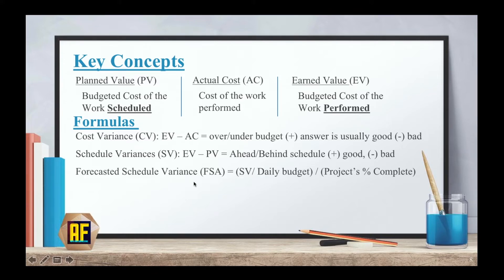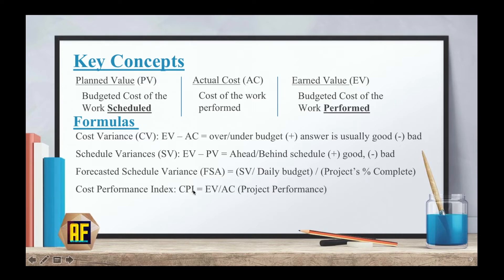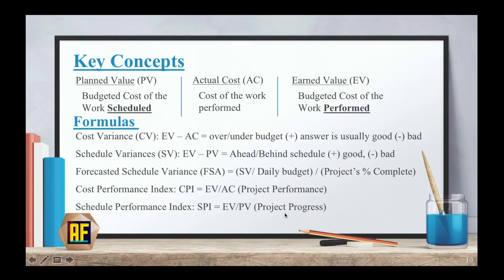The forecasted schedule variance, FSA, will let me know if my project is ahead or behind in days. While the schedule variance gives a dollar answer, the FSA will actually give me an answer in days. The cost performance index, CPI, which is earned value over actual cost, will tell me my project's performance. And the schedule performance index, SPI, which is earned value over planned value, will tell me my project's progress.